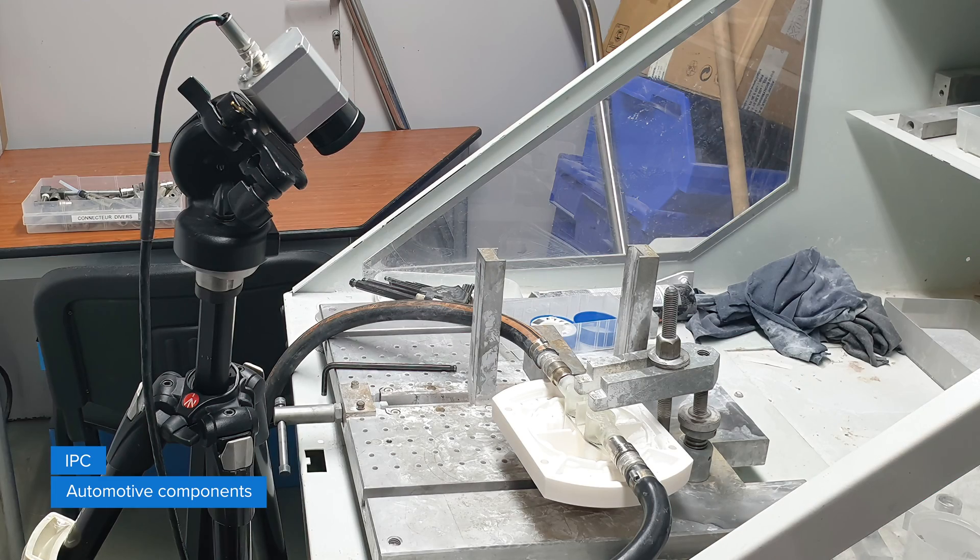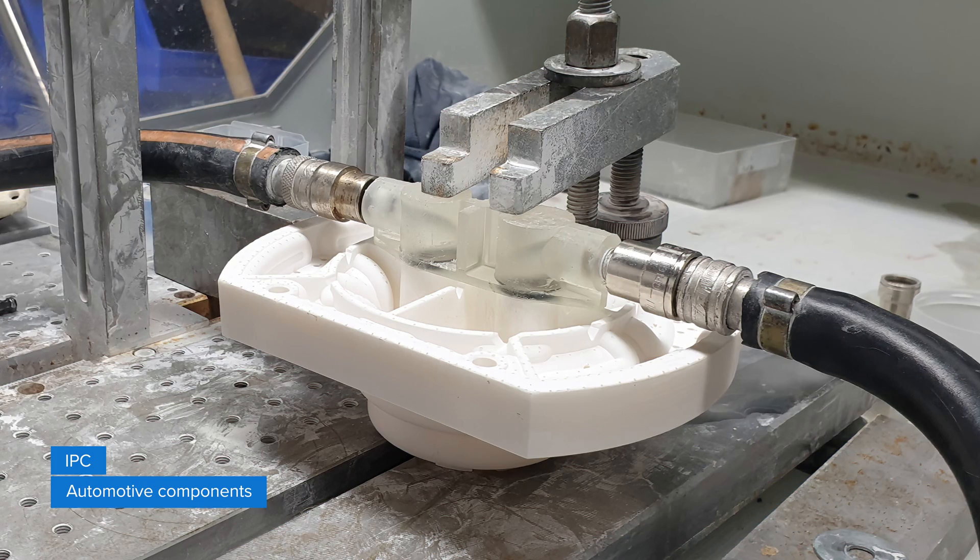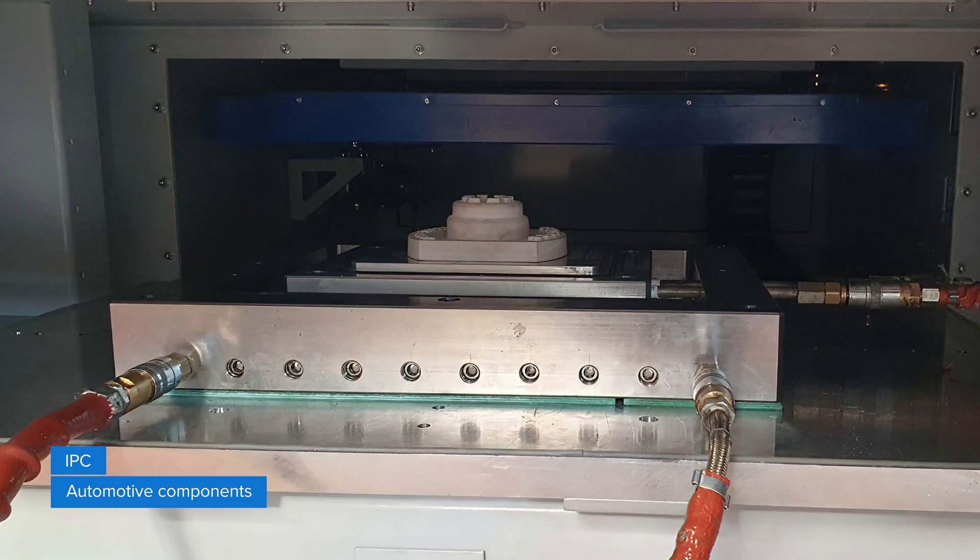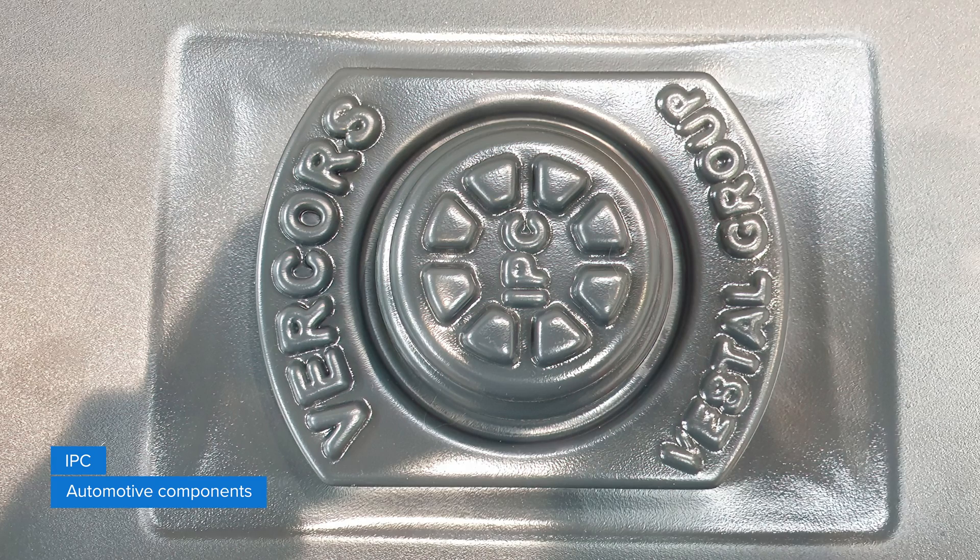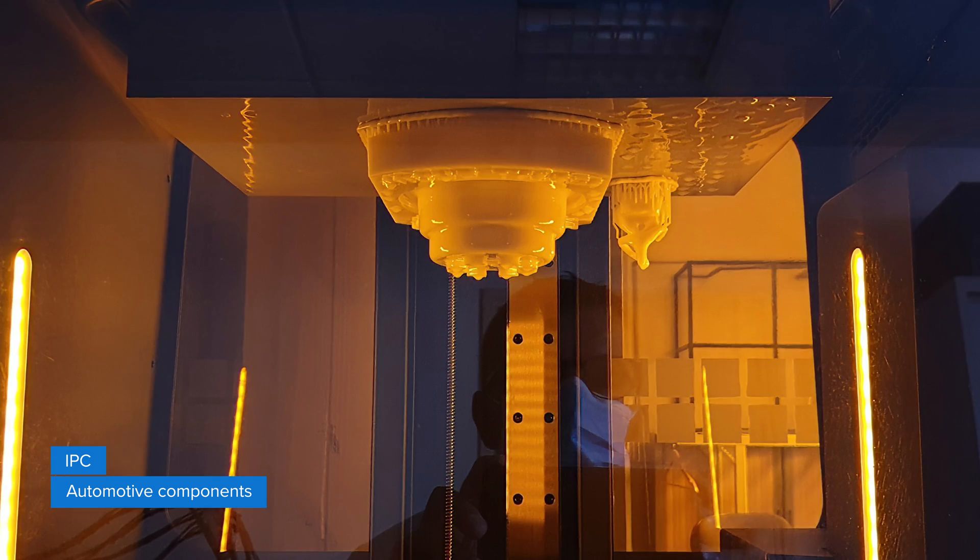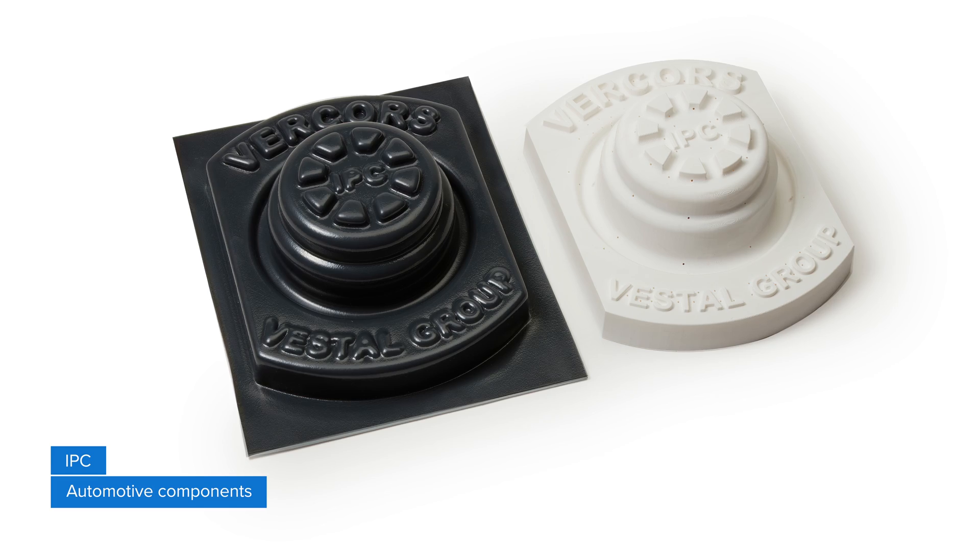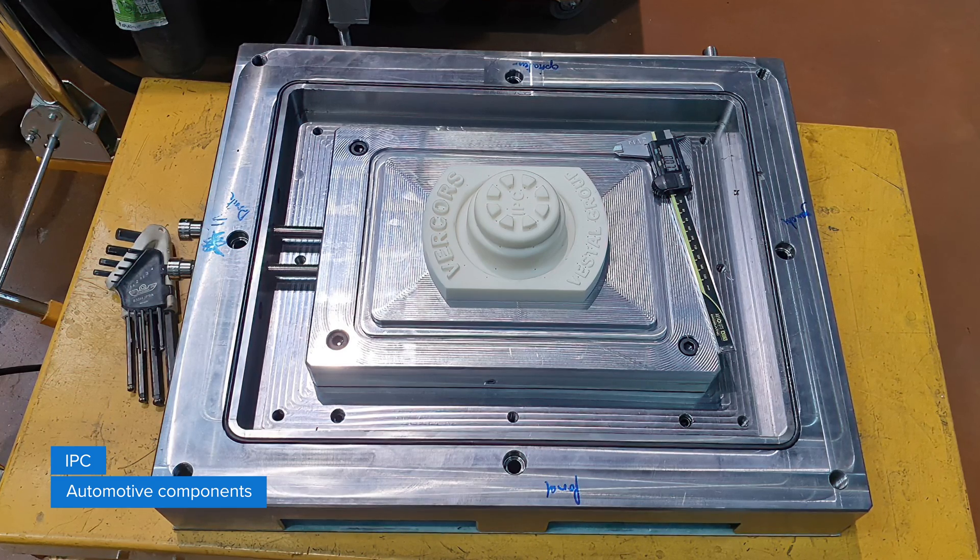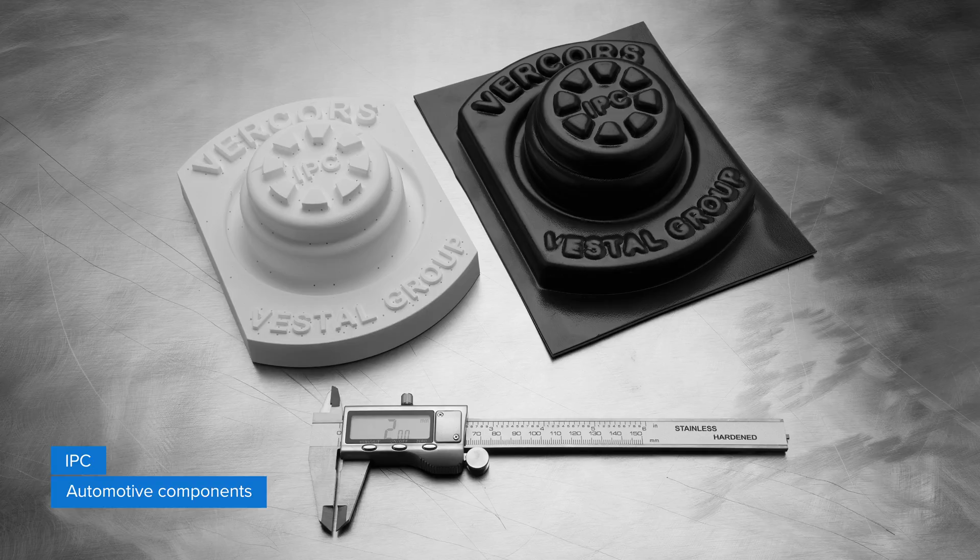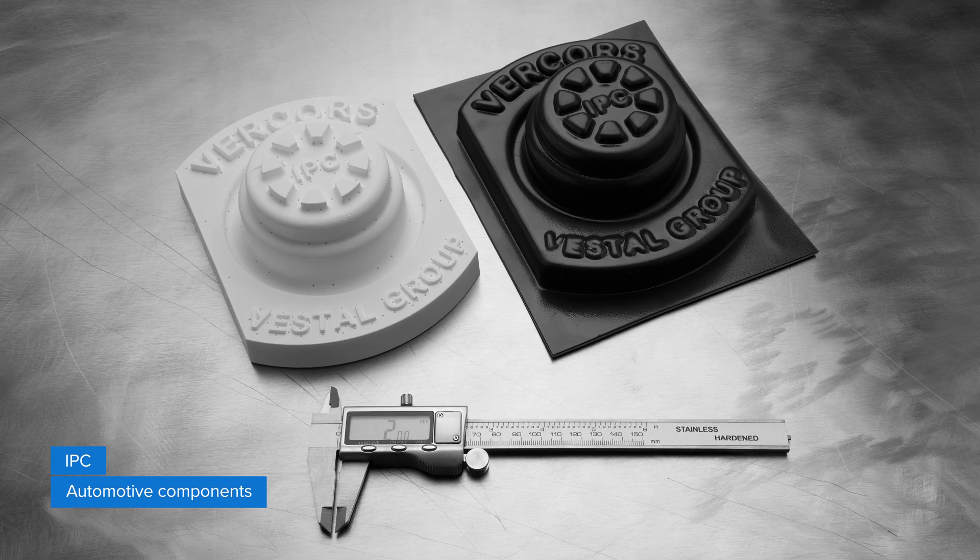The research center IPC tested the viability of thermoforming thick sheets of polystyrene and ABS for the production of automotive components. With a tool printed in rigid 10K resin, they formed dozens of parts while respecting a cycle time close to production. They cut costs by more than a half and reduced lead time from 21 days to 3 and a half days compared to traditional methods.